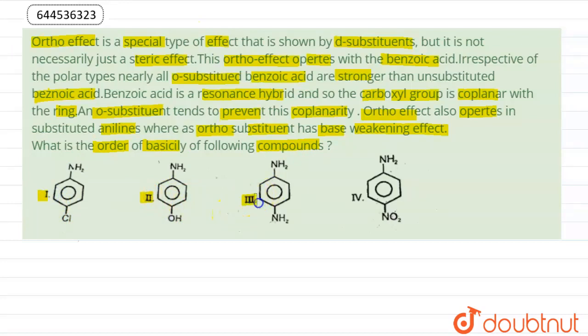para-aminoaniline, and fourth compound is para-nitroaniline. All can be considered as substituents of aniline, and these are the groups present. Now let us see the effect of these groups on basicity of aniline.